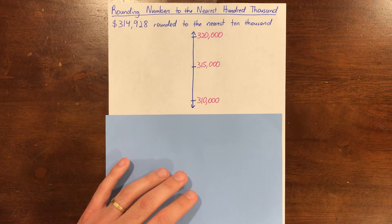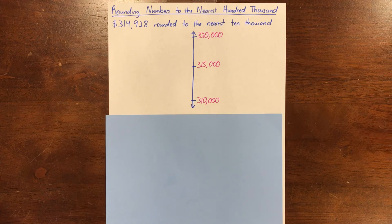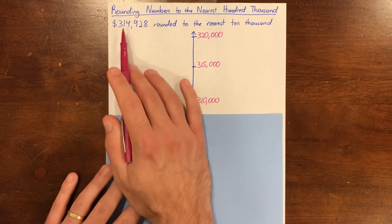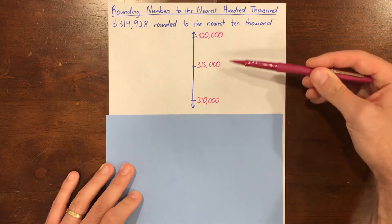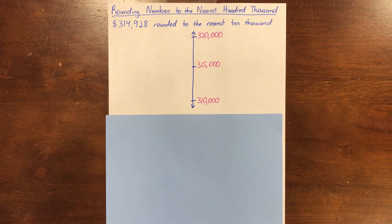15,000 is halfway between 10,000 and 20,000. Where are we going to put our number? How do you know? Say it out loud. Just like yesterday, we can look at the place that we're rounding and especially the places that come after it. We see there are 4,000, so we know the number is going to be less than our midpoint of 315,000. We can put it close to 315,000 because 314,928 is almost 315,000, but it's still less than 315,000.